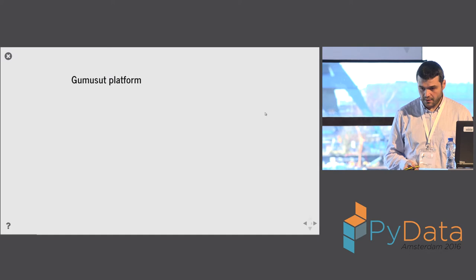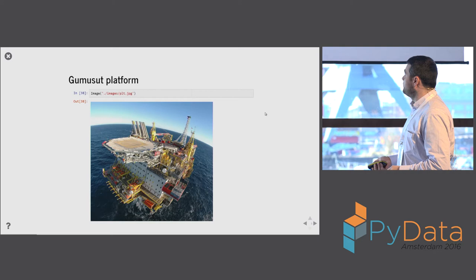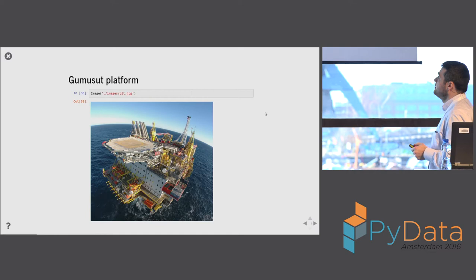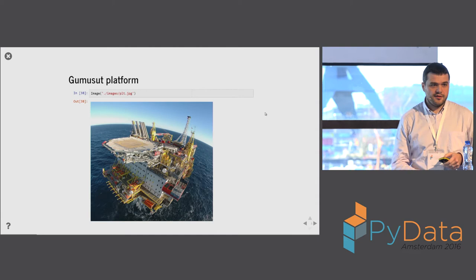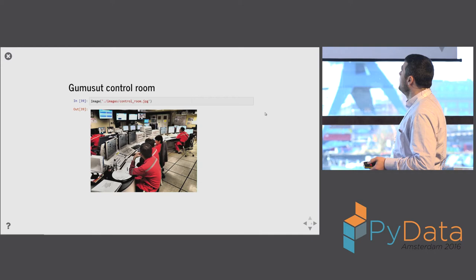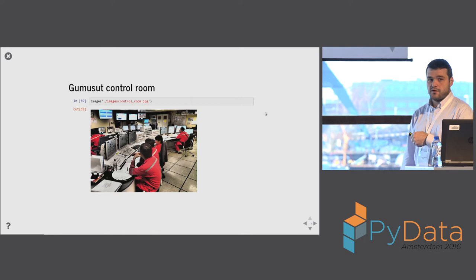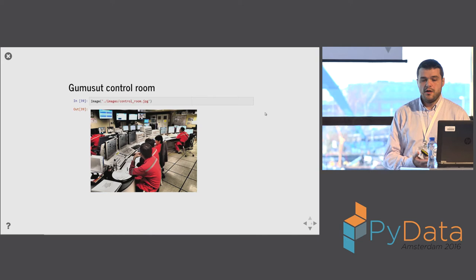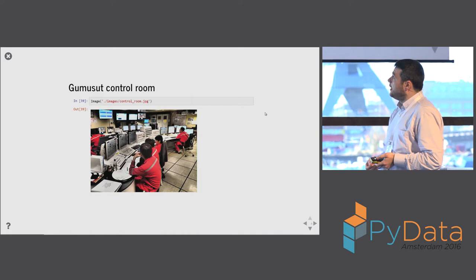This existing platform is the Gumusut platform in Malaysia. Just to give you an order of magnitude, that window there makes it a big thing. Here is the heli deck, here we have the flare, and that's where production is collected, processed, and exported. Inside this platform and all our production facilities, you have control rooms where operators take decisions based on what they see on screens — a simplified version of the control system — in order to avoid incidents.